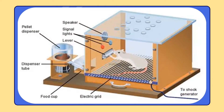The Skinner Box contained a lever and a food tray in a corner. The animal was free to move inside the box, but pressing the lever would give the animal a pellet of food as reinforcement. It was found that in the beginning, the rat pressed the lever occasionally and got food as reinforcement for each pressing. Gradually, as the animal learned that pressing the lever would give food, it repeated its response very rapidly.